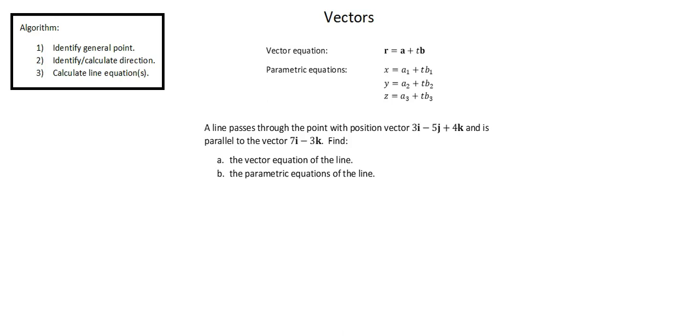Our problem reads: a line passes through the point with position vector 3i minus 5j plus 4k and is parallel to the vector 7i minus 3k. Find the vector equation of the line and the parametric equations of the line.